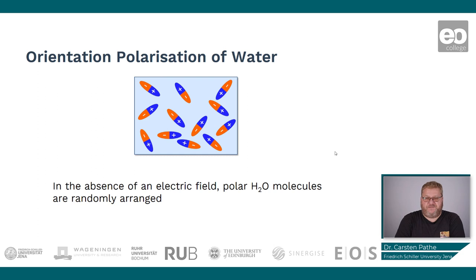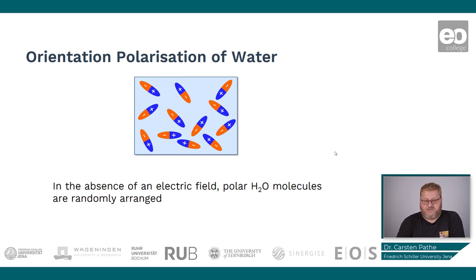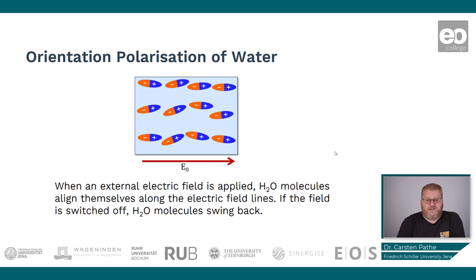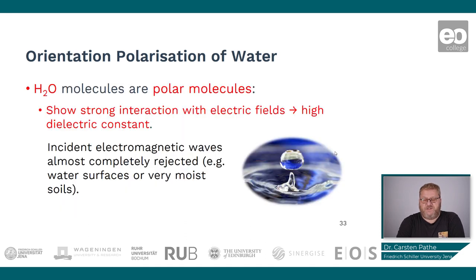On this slide we have a figure showing how water molecules acting as dipoles are oriented when no electromagnetic field is applied — in this case they are randomly arranged. As soon as an electromagnetic field impinges on the soil surface, the dipoles will react to the external electric field and align with the field lines. And as soon as we remove or switch off the field, they will swing back. This reaction of the dipoles to the presence of an electromagnetic field leads to the fact that we can measure a dielectric constant.